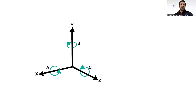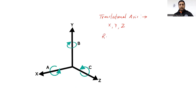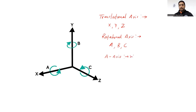This figure shows the typical axes in a CNC system — that is X, Y, Z, and then A, B, and C. Here, three are the translational axes: X, Y, and Z. And three are rotational axes: A, B, and C. You can see in the diagram that if we have a rotational motion about the X-axis, then that axis is termed as A-axis. So A-axis is defined as rotation about the X-axis.